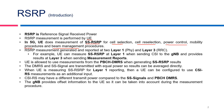The RSRP measurements are generated and reported at two layers in 5G. These two layers include layer 1, which is the physical layer, and layer 3, which is RRC. For example, the UE can measure the SS-RSRP at layer 1 when it is sending CSI reports. The CSI reports include CQI measurements, RI measurements, and other measurements related to layer 1. The base station can provide SS-RSRP measurement results at layer 3 when sending measurement reports.